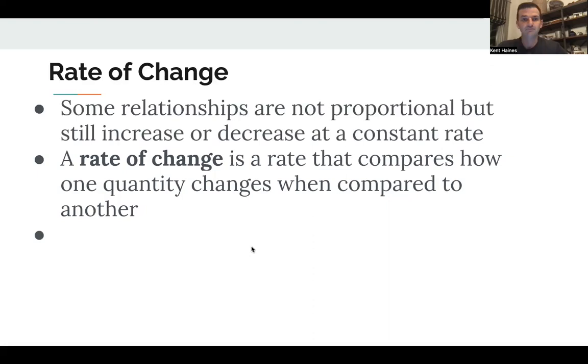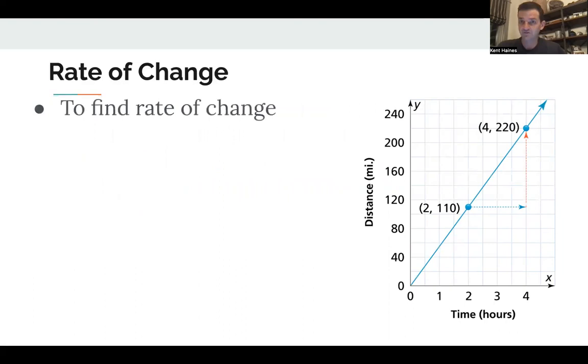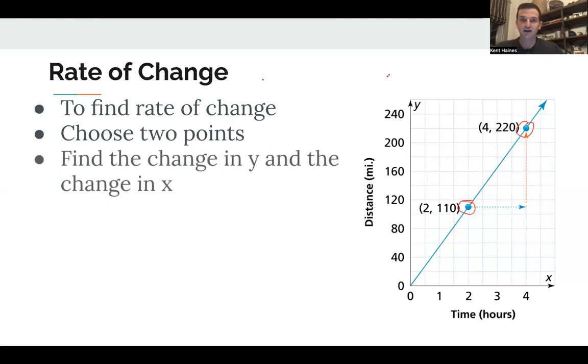Okay. So in order to find a rate of change, this will maybe sound familiar. We're going to have to choose two points. So if we look here, we have hours and distance are the two categories here, I'm going to choose two points. The two points that are provided are (2, 110) and (4, 220). Then I'm going to find the change in the Y value, which in this case is distance and the change in the X value, which in this case is time. So the change in Y, Y goes up by 110 miles, right? From 110 to 220. And of course, if I don't know that I can just always subtract to figure that out. And the time goes up by two hours. Cause it goes from two hours to four hours.